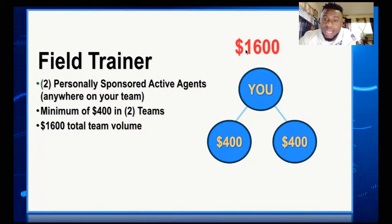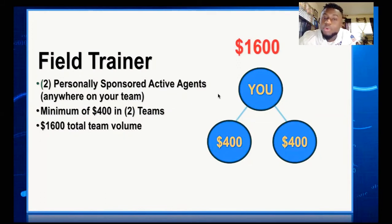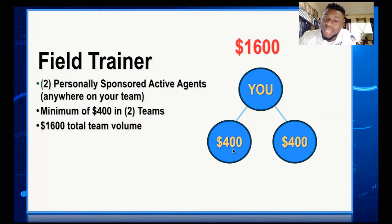If the total volume when you check it is not 1600, you don't get the promotion — the total volume must be 1600. To make the total volume, you can sign an agent, sign a client, or continue signing agents and clients. Any agent who signs directly below you contributes 400 in volume. Any client who signs directly below you contributes 200 in volume.